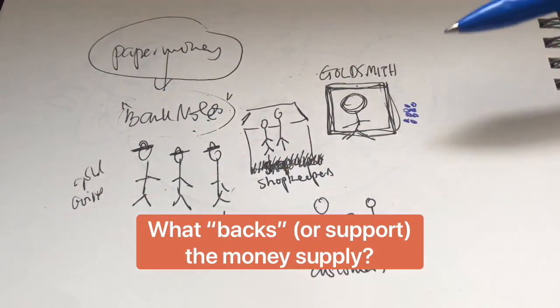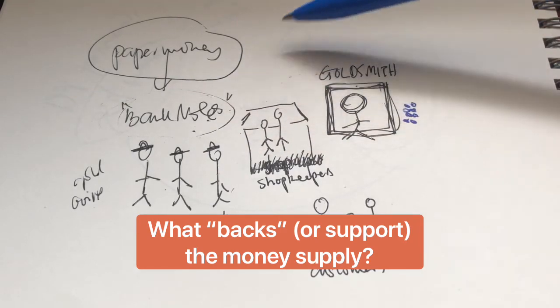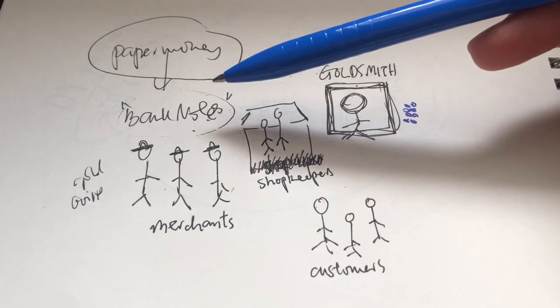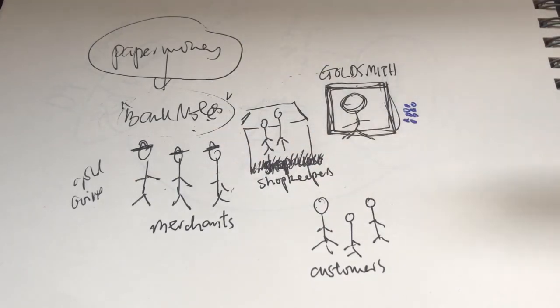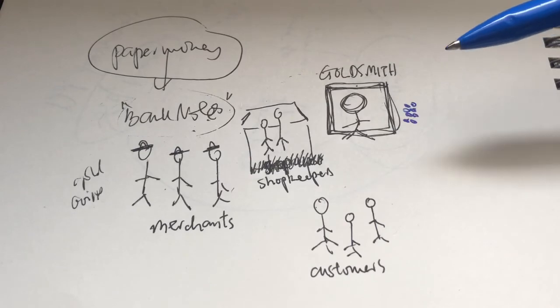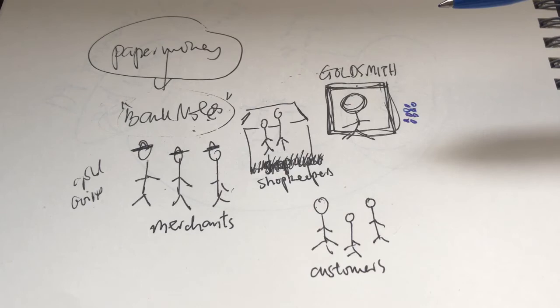Now, as you can see from our simple illustration here, back then, all of the banknotes are backed by gold. What that means is each and every banknote is redeemable for its value in gold by the government or the goldsmith at the time. Now, this was meant to increase the confidence of the paper money, because people know that it is linked to something valuable, that is gold.